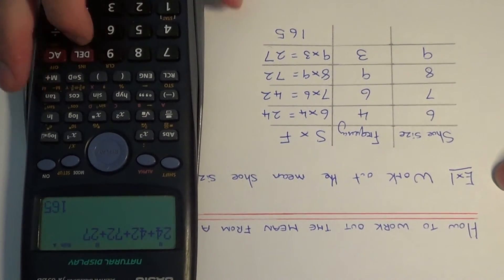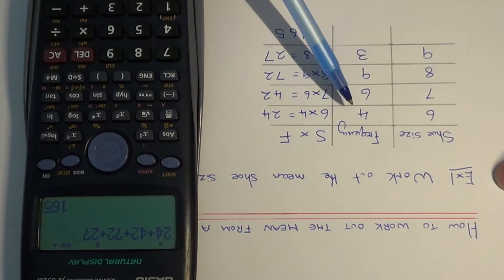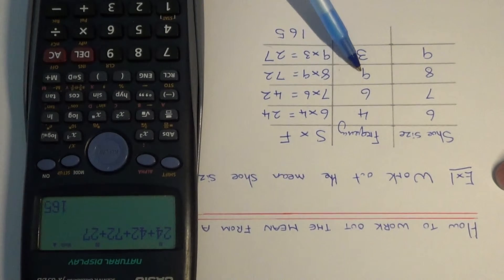And we now need to divide this by the total frequency. So we get the total frequency by adding up the frequency column. So 4 add 6 is 10, add 9 is 19, add 3 is 22.